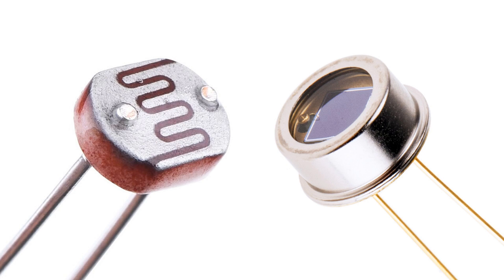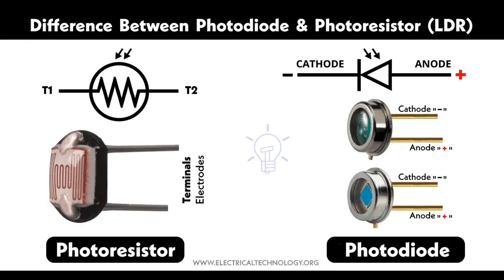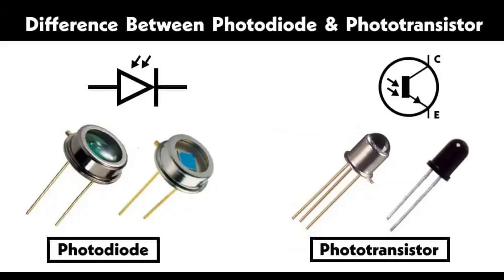Compact and lightweight: Photodiodes can be made very small, advantageous for compact sensors in wearable devices and portable electronics. Low power consumption: Photodiodes consume very little power, making them ideal for battery-operated and energy-efficient systems. Robust and durable: Photodiodes are generally robust with a long operational life, making them reliable for long-term applications. Cost effective: The materials and manufacturing processes are relatively inexpensive, making them cost-effective for large-scale production.